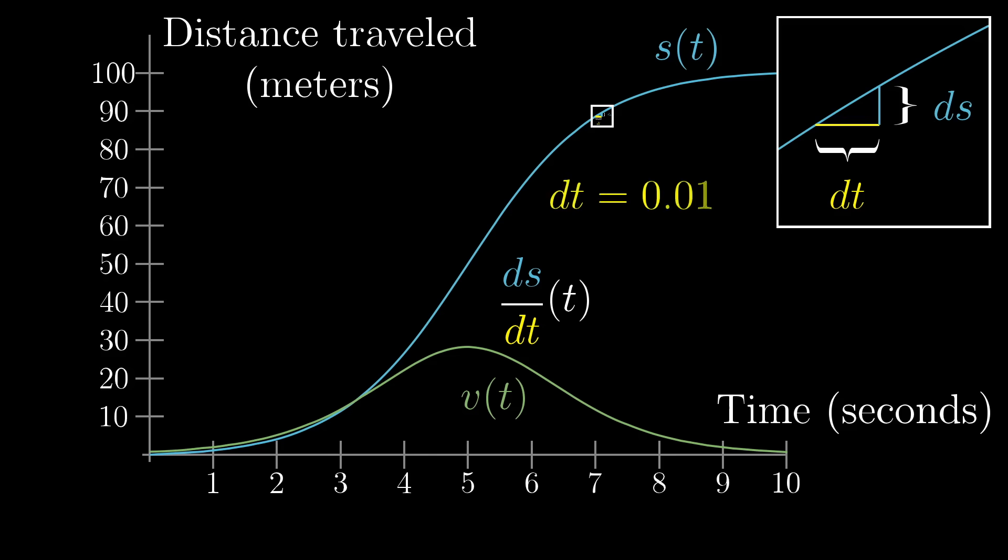First, I chose a small value for dt. I think in this case it was 0.01. Then I had the computer look at a whole bunch of times t between 0 and 10, and compute the distance function s at t plus dt, and then subtract off the value of that function at t. In other words, that's the difference in the distance traveled between the given time t and the time 0.01 seconds after that. Then you can just divide that difference by the change in time, dt, and that gives you velocity in meters per second around each point in time.